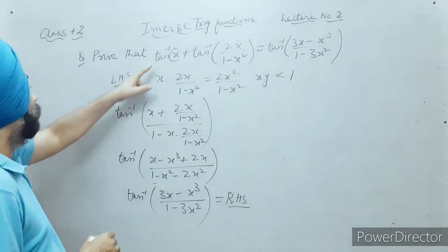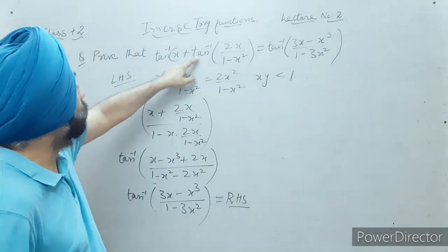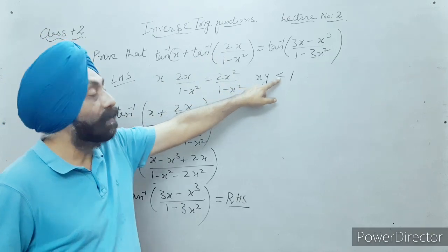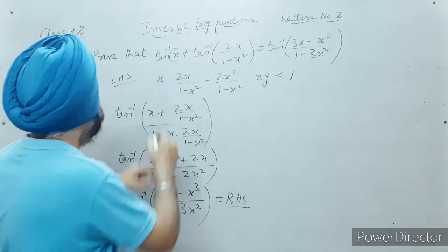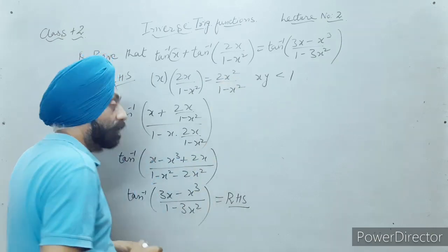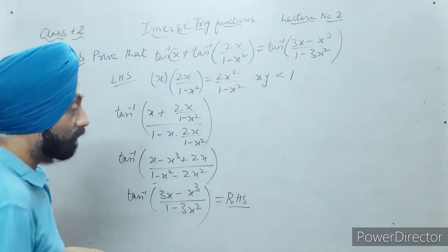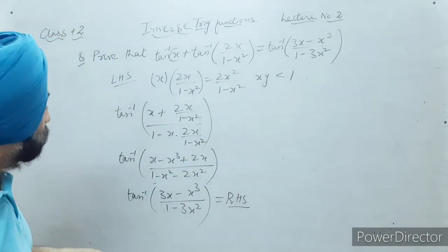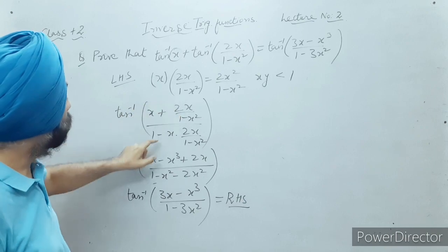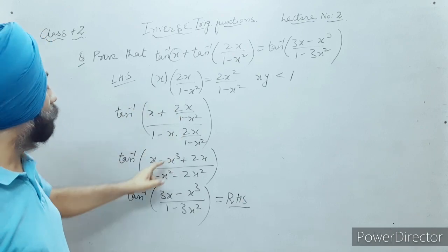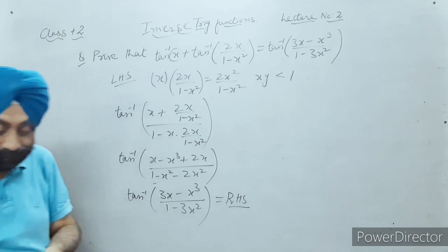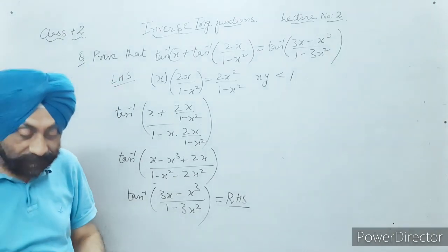What I applied is tan inverse x plus tan inverse y. The condition was xy less than one; xy comes out to be 2x² upon (1 minus x²), which is less than one. I apply tan inverse [(x plus y) upon (1 minus xy)], solve it, and get the right hand side which is tan inverse [(3x minus x³) upon (1 minus 3x²)]. Next sum.